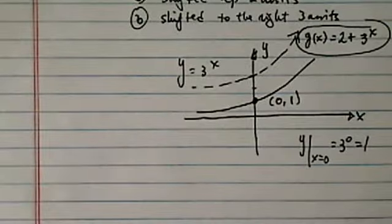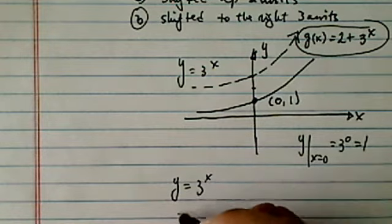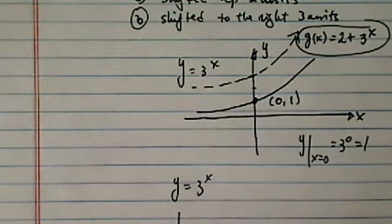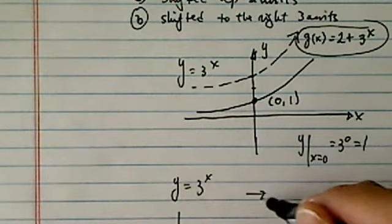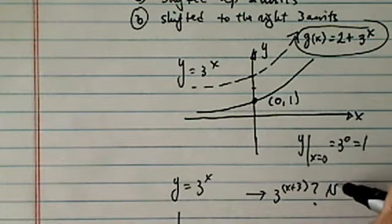Now let's shift it to the right 3 units. A lot of students would assume if this one is shifted 3 units to the right, you would think it's going to be 3^(x+3). The answer is no.